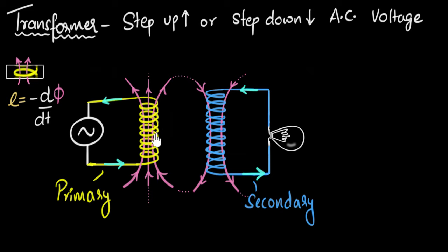Now, if there are total, let's say NP number of coils, where P stands for primary, then what is the total EMF generated? Well, the total EMF generated, that will be the voltage in the primary. That will be just NP times E.